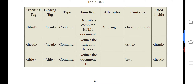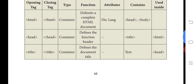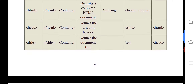The attributes used in the HTML tag are direction and language. Next is the head tag — it also has an opening tag and a closing tag, so it is a container type. The head tag defines the header section and is used inside the HTML tag.